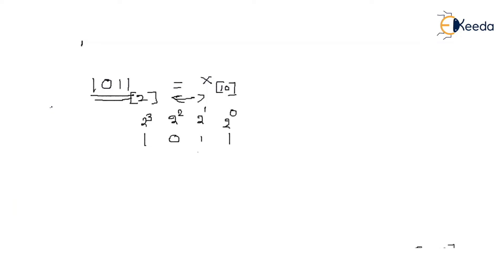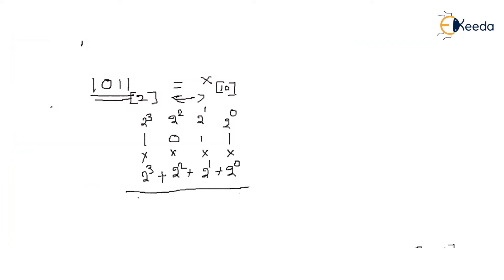To convert from one number system to another, multiply each digit by its corresponding weight. In binary, the weights are: position 0 = 1, position 1 = 2, position 2 = 4, position 3 = 8, position 4 = 16, position 5 = 32, and so on.